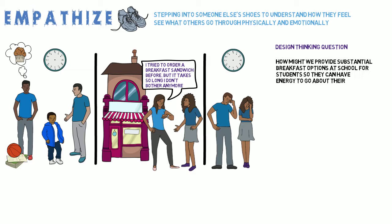The statement focused on the problem — they don't try to offer solution ideas at this point in the project. They need to do research before they can generate ways to solve the problem. The statement is also broad enough that they could consider making a physical object, a program, or a system to solve the problem. However, it's narrow enough that they can actually address the issue.